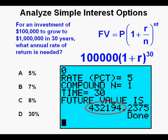We get about $432,000. It's not enough so we cross off answer A.